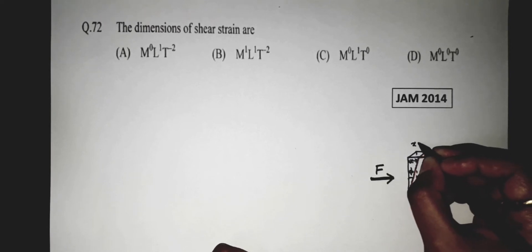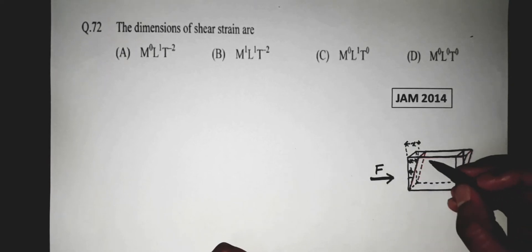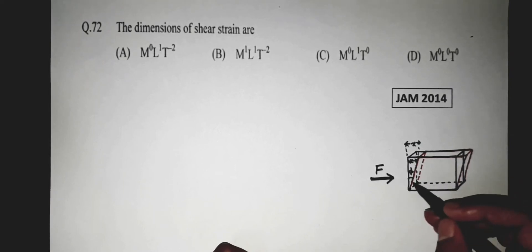I am again writing, this is X. Before applying this force, the object was here, the blue one. And after applying this force, this object is deformed to this red one. So deformed to an angle phi, and the length of deformation is X.